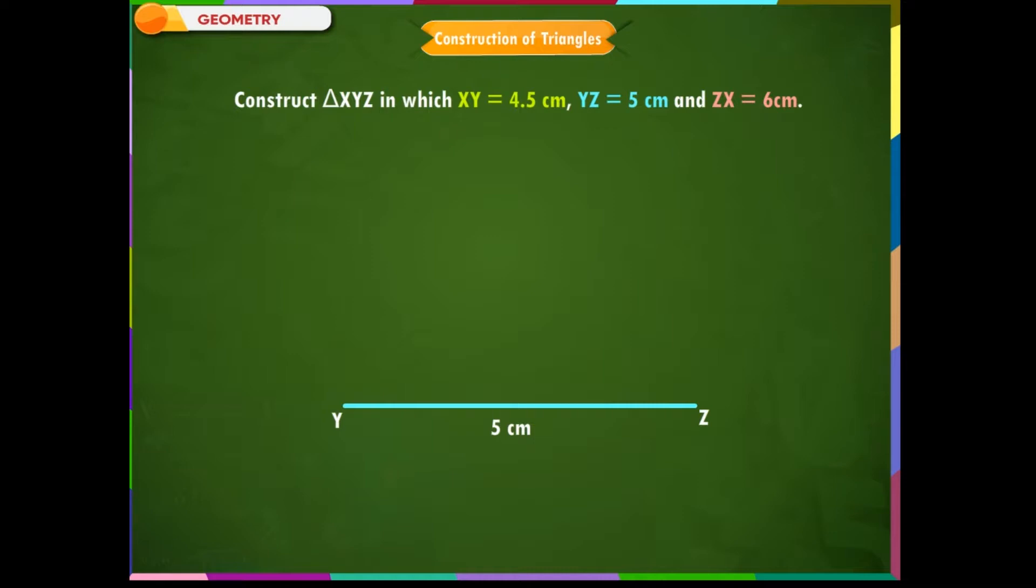Step 2: From Y, point X is at a distance of 4.5 cm. So, with Y as center, draw an arc of radius 4.5 cm.